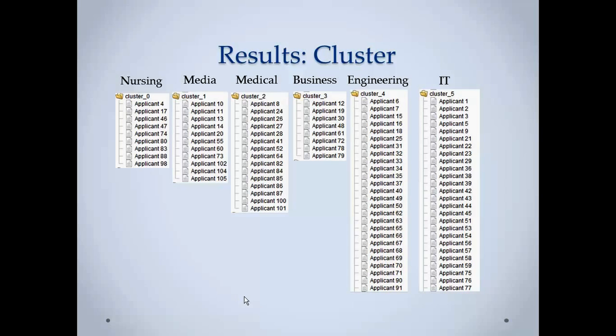Same goes with cluster 1, that is of media, cluster 2 medical, cluster 3 business, cluster 4 engineering, cluster 5 IT. So if you divide the different resumes in these formats, you can know that this particular number of applicants have applied for engineering department. So you can just get this resume directly to the engineering department and they can sort the best person they like.